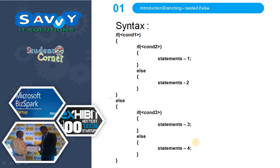So here the syntax is: if condition 1 is true then condition 2 will be checked. If condition 2 is true then statement 1 will be executed. If condition 1 is true and condition 2 is false then statement 2 will be executed. If condition 1 is false then it goes directly to condition 3. If condition 3 is true then statement 3 will be executed. If condition 1 is false and condition 3 is false then statement 4 will be executed.